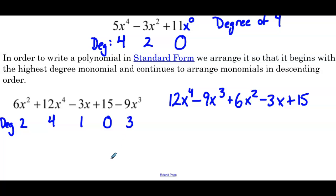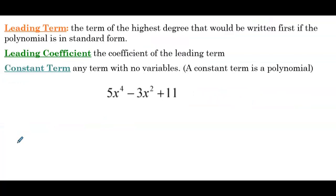A few more definitions to finish off our polynomial video. And that's going to be leading term, leading coefficient, and constant term. So these are a few things that you may hear your teacher refer to. So leading term is the term of the highest degree that would be written first if the polynomial is in standard form. So leading coefficient is the coefficient of that leading term. And the constant term is any term with no variables. So a constant term is a polynomial, just a nice reminder of that. Any number is a polynomial.